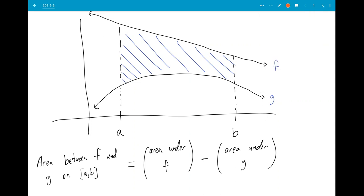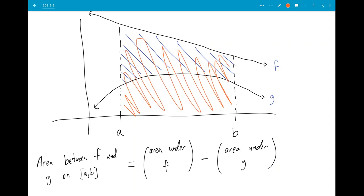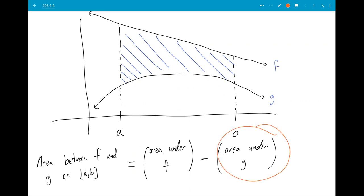When I say area under F, what I mean is the area between F and the x-axis. And when I say area under G, what I mean is the area between G and the x-axis.